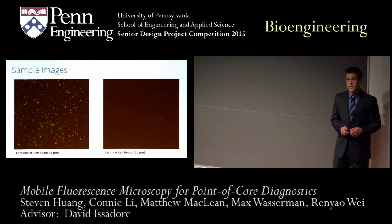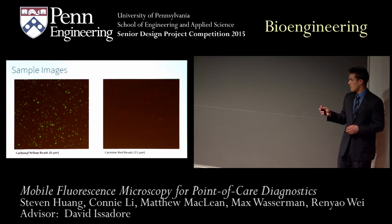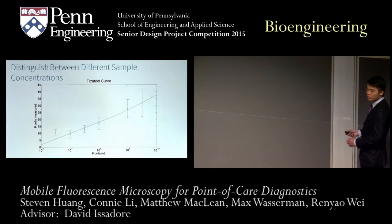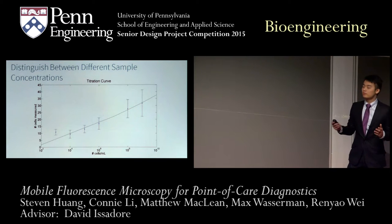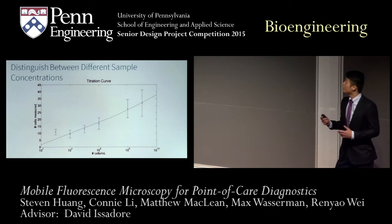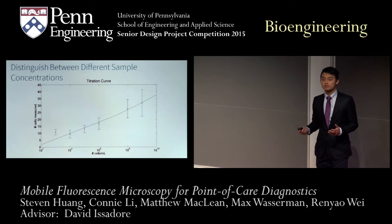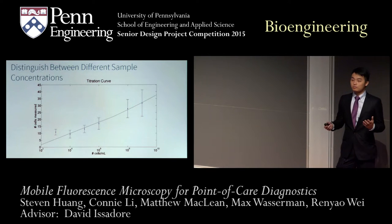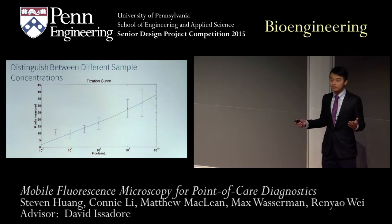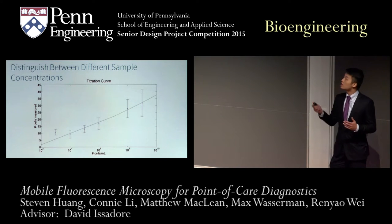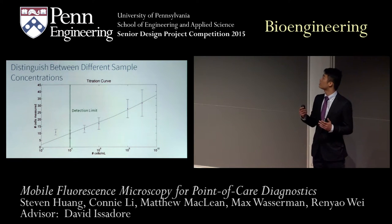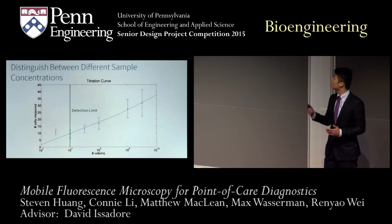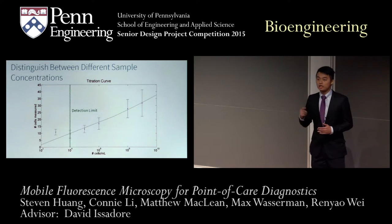These sample images taken on our device show that we can achieve very high resolution for objects on the micron scale. To evaluate our device, we demonstrated it can measure bacterial cells of similar size and morphology to tuberculosis cells using BCG cells — a strain of bovine tuberculosis used as a surrogate for human tuberculosis in the laboratory for safety reasons. We prepared BCG samples in a concentration gradient and measured the number of cells detected. Results show that above a concentration of 10,000 cells per milliliter, our device consistently detected more cells with higher sample concentration, with a detection limit of approximately 10,000 cells per milliliter — on par with the state-of-the-art diagnostic device.